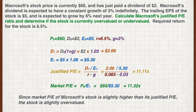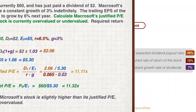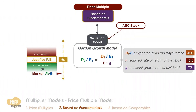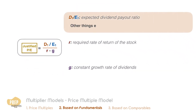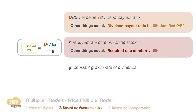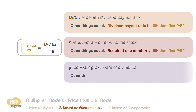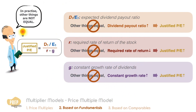Since the market P/E of Macrosoft's stock is slightly higher than its justified P/E, the stock is slightly overvalued. One advantage of this approach is that it makes clear how the firm's P/E ratio should be related to its fundamentals. We can see from the formula that, other things equal, the justified P/E ratio will increase with a higher dividend payout ratio, and will also increase with a higher growth rate. So if the subject firm has a higher dividend payout ratio, lower required return, and higher growth rate than its peers, a higher P/E ratio may be justified.